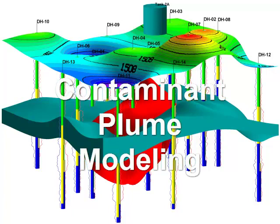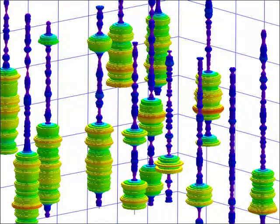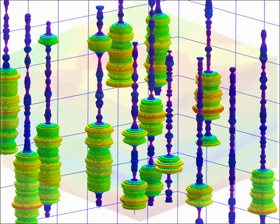The first step in contaminant plume modeling is to enter the data and generate strip logs. In this example, relative benzene concentrations are shown by proportionally scaled and colored discs.